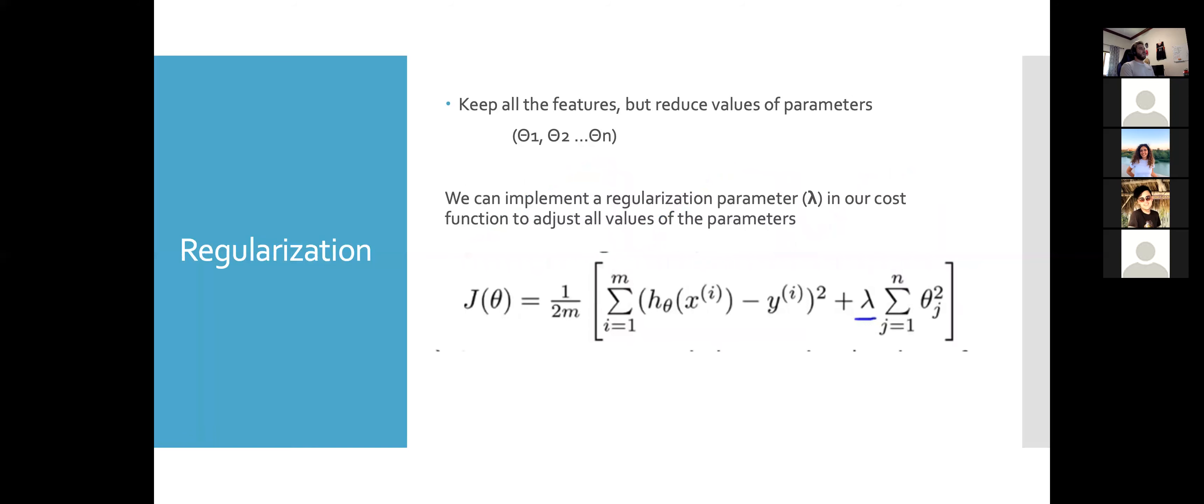With regularization, we can keep all of our features, but we just reduce the values of the parameters. It's very simple to implement this. We will just introduce a new parameter called the regularization parameter, which is the lambda symbol, and we'd introduce this in our cost function. Everything stays the same, but we just add, right tacked onto the end, the addition of lambda of the summation of all our data values.